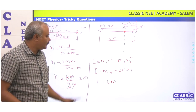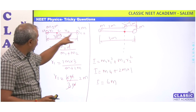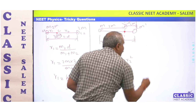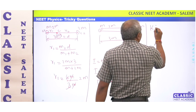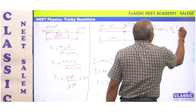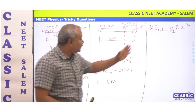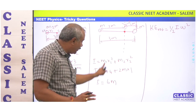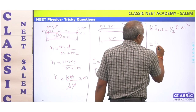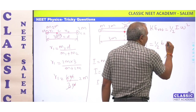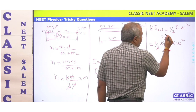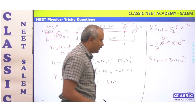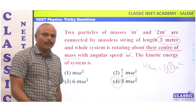I equals 6m, so kinetic energy rotation equals half into I into omega squared. Substituting I equals 6m: half into 6m into omega squared, which simplifies to 3m omega squared. So the kinetic energy of rotation equals 3m omega squared. Option 4 will be the answer.